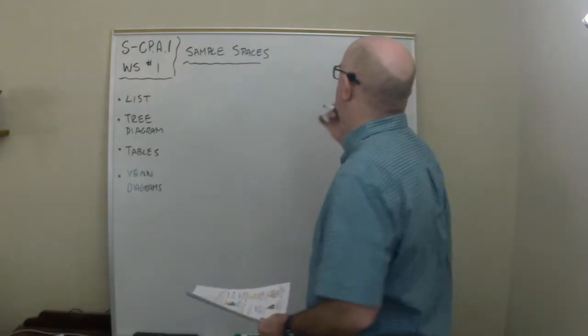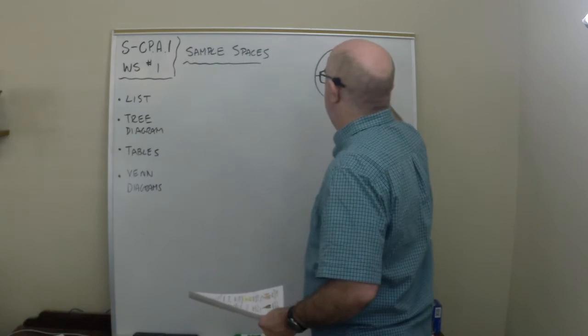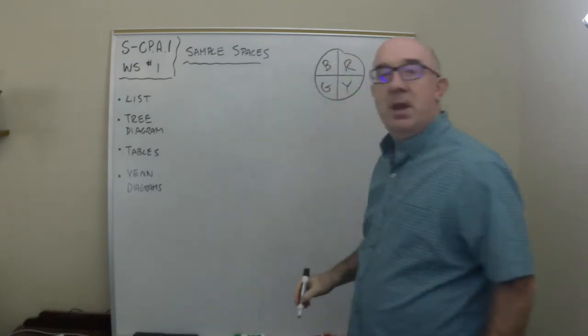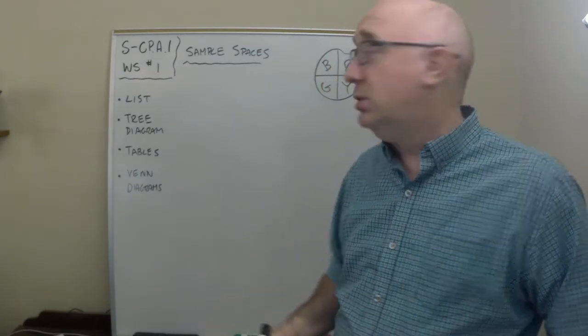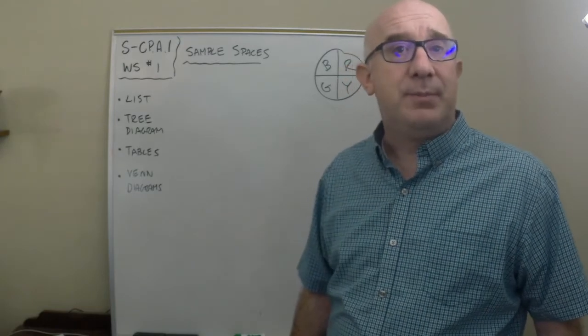A typical sample space might be a spinner. So we have a spinner and we have red and blue and green and yellow. The sample space here happens to be red, blue, green and yellow. And so those are what's in the sample space.